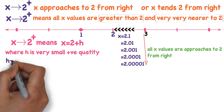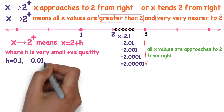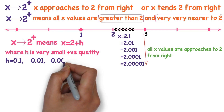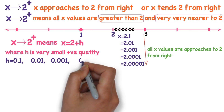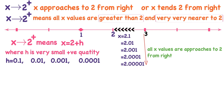For example, take H equal to 0.1 and substitute in 2 plus H — you get 2.1. Similarly, take H equal to 0.01 and substitute in 2 plus H — you get 2.01.